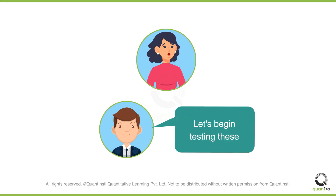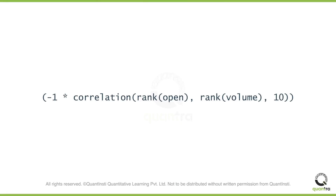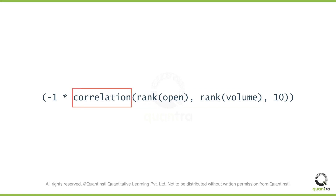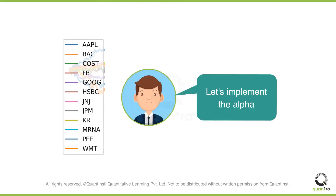Let's have a look at some of them. For a start, let's look at alpha number 3. There are a few things here that we can already recognize. First, we are calculating the cross-sectional ranks for volume and open price. We then determine the correlation coefficient between the two on a 10-period rolling basis. The factor minus 1 means that this is a mean reverting alpha — the lower the value, the longer our position. In order to make this meaningful, we download a selection of 12 US stocks from different sectors. We are now ready to implement the alpha.